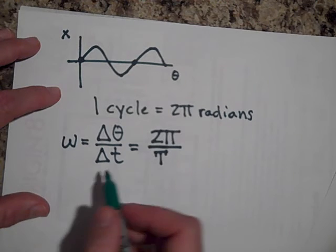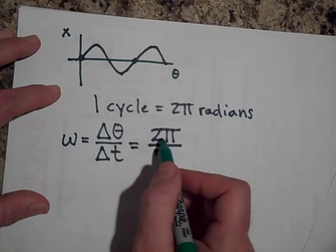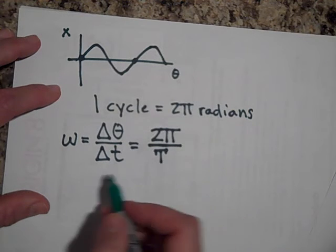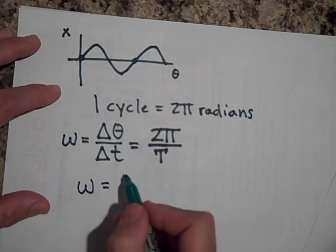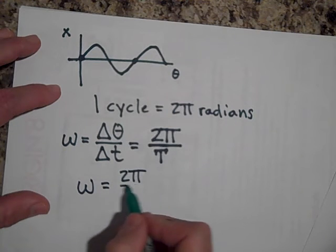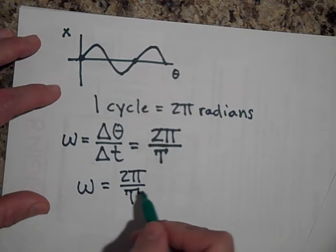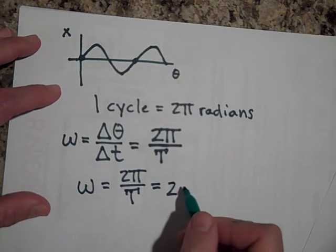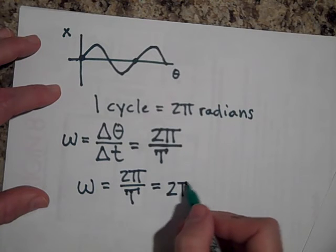It's just like the frequency is cycles per second. This would be radians per second. And since ω is equal to 2π over the period, and the period is one over the frequency, then it looks like the ω is also equal to 2πf.